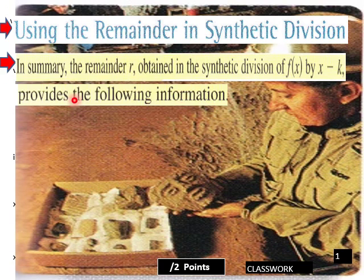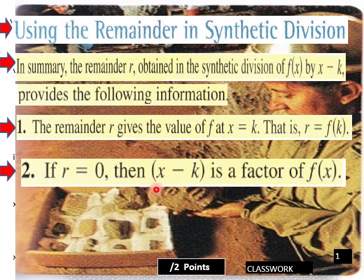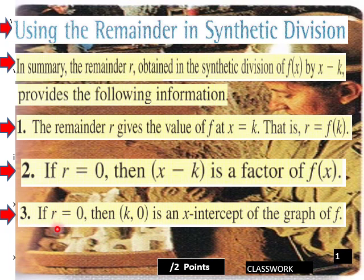Using the remainder and synthetic division — in summary, the remainder r obtained in the synthetic division of f of x by x minus k provides the following information: One, the remainder r gives the value of f at x equals k, that is r equals f of k. Two, if r equals zero, then x minus k is a factor of f of x. Three, if r equals zero, then k comma zero is an x-intercept on the graph of f. This is very crucial in finding zeros by using synthetic division.